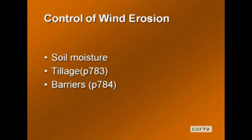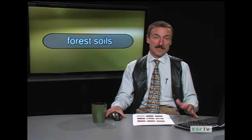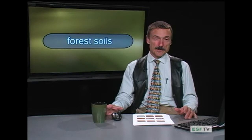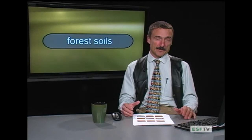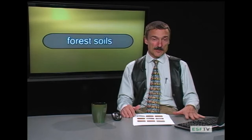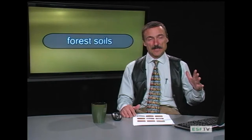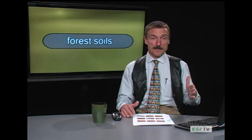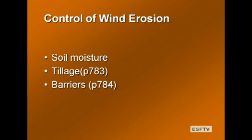That leads us to controlling wind erosion. The big three: first, soil moisture — moist soils tend not to blow, and as soils dry out they become very susceptible. Second, tillage — tilling removes vegetation and exposes the soil surface to drying. You can reduce wind erosion probability by limiting tillage and avoiding a complete moldboard plow clean surface. Third, barriers — a row of trees, plants, or a snow fence placed perpendicular to the wind will reduce wind erosion.